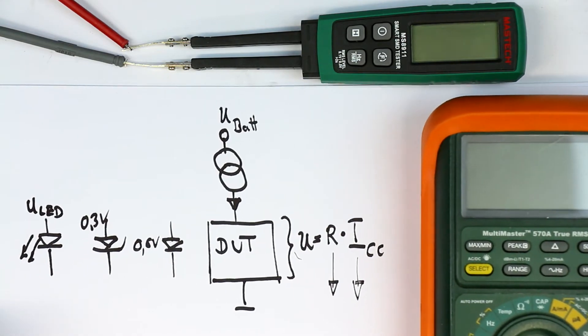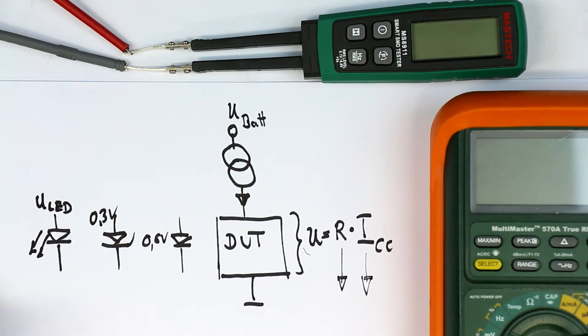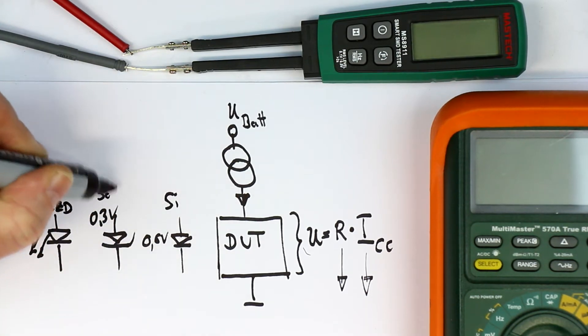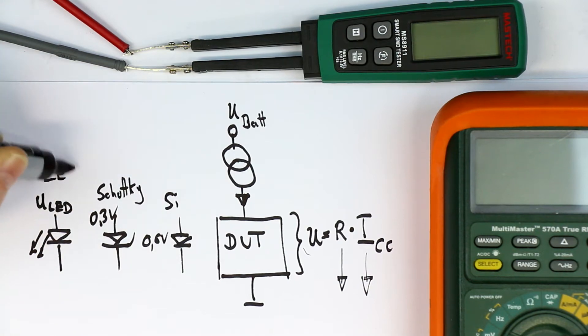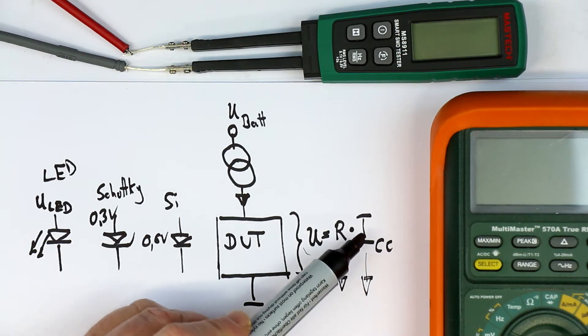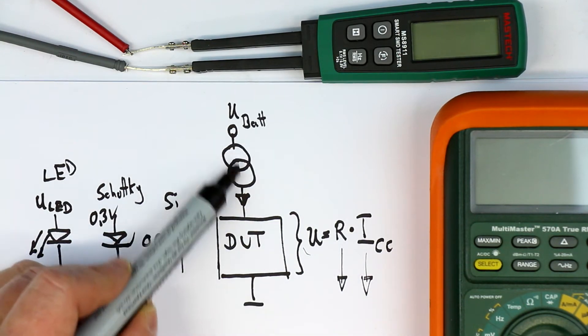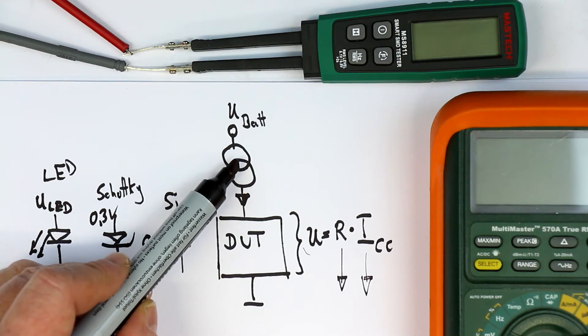So that's how it should look. A normal silicon diode, a Schottky, and an LED. So the only thing we have to know is what amount of constant current is generated here inside the multimeter.